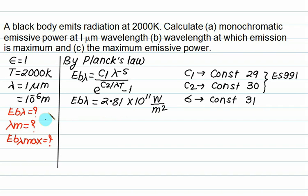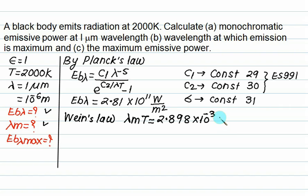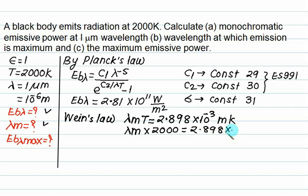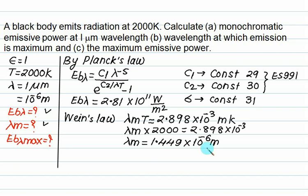Next, calculate lambda_m using Wien's law. Lambda_m times T equals 2.898 times 10 to the power minus 3 meter-Kelvin. With temperature equals 2000 K, lambda_m comes out to be 1.449 times 10 to the power minus 6 meters.